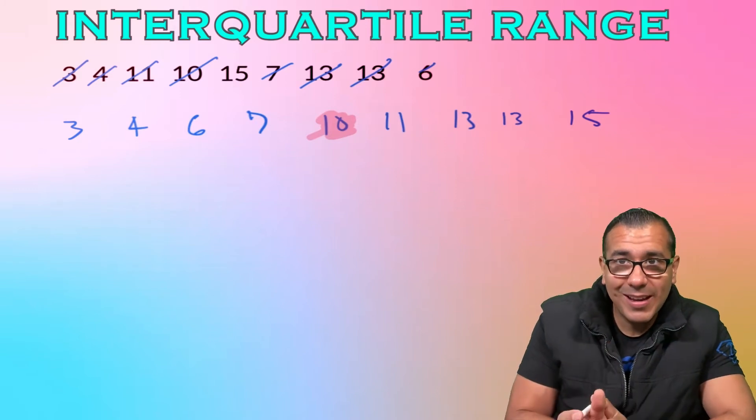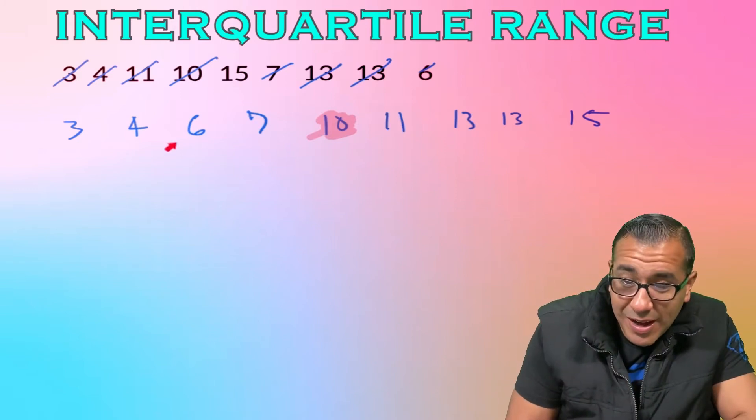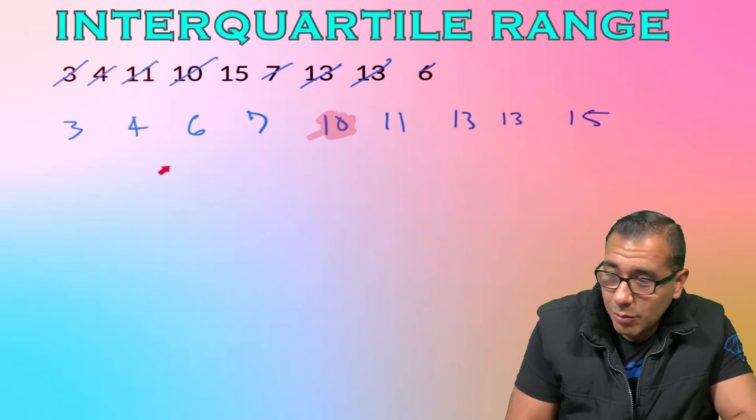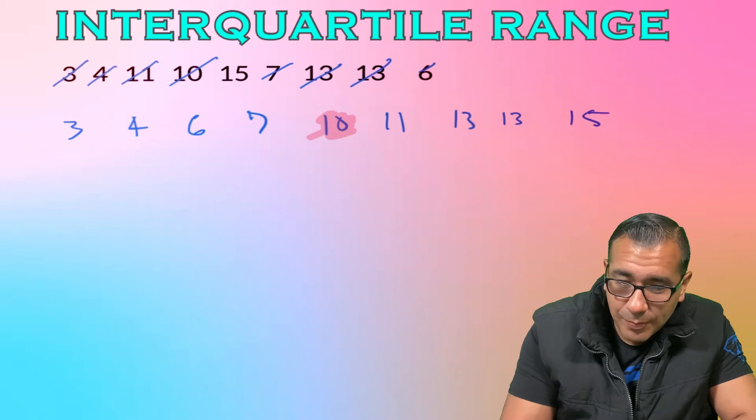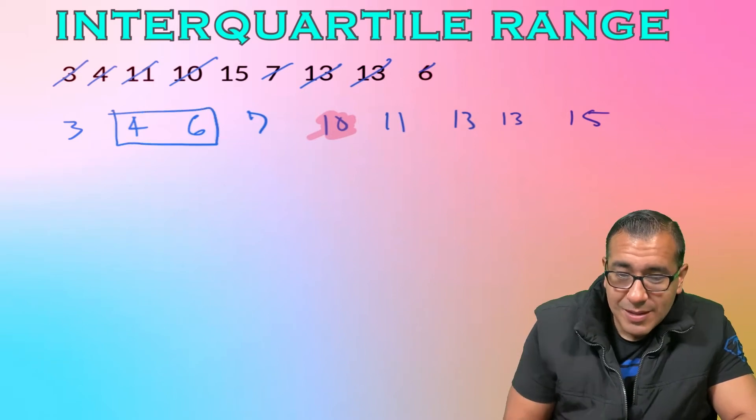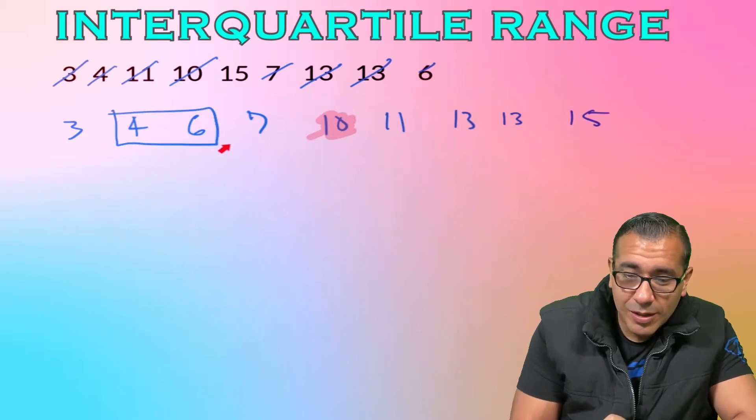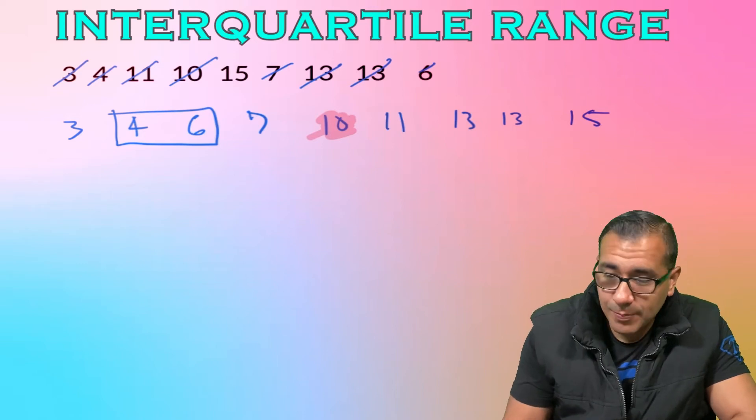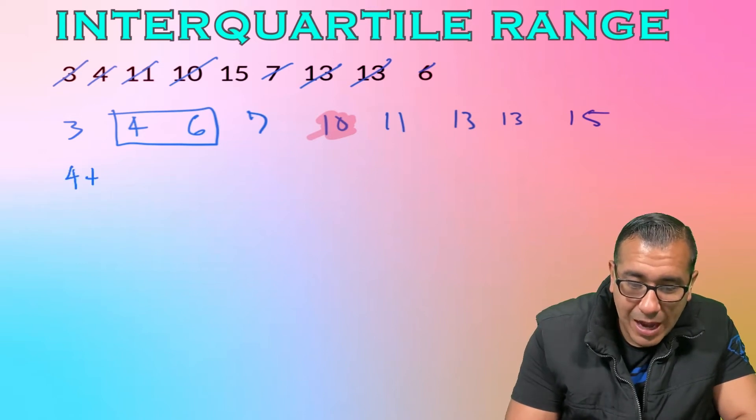To find it, once we find these quarters, we're going to find Q3 and Q1 and subtract those values. That's how we find the IQR. So we're going to find the midpoint of the lower half. Since we have four values over there, we're going to find the middle, which is the average of four and six.